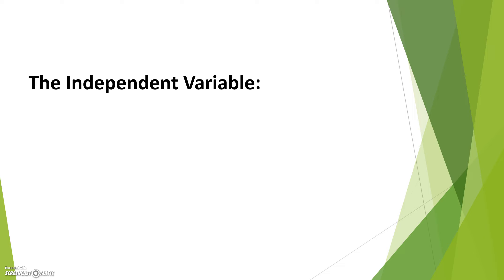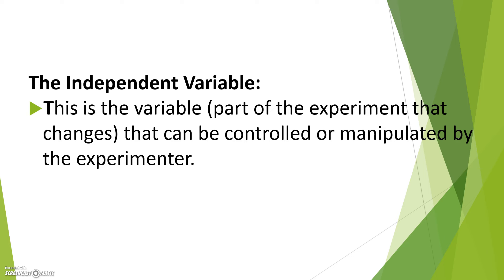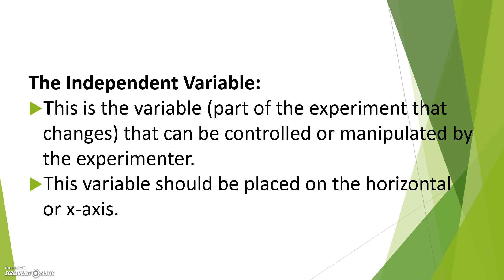Next we have our independent variable. The independent variable is the part of the experiment that changes. It's the part that can be controlled or manipulated by the experimenter. This variable should be placed on the horizontal or the x-axis.